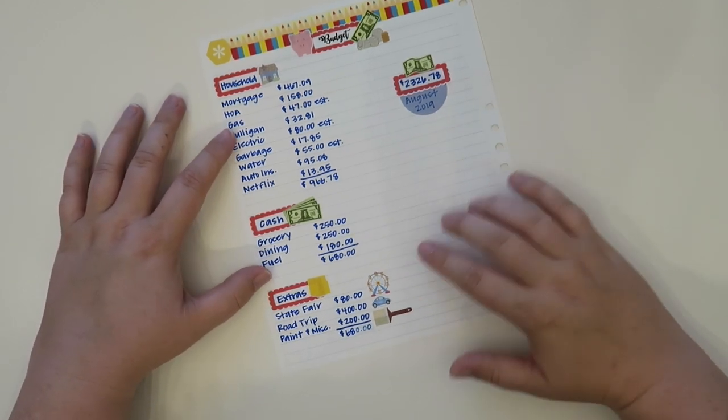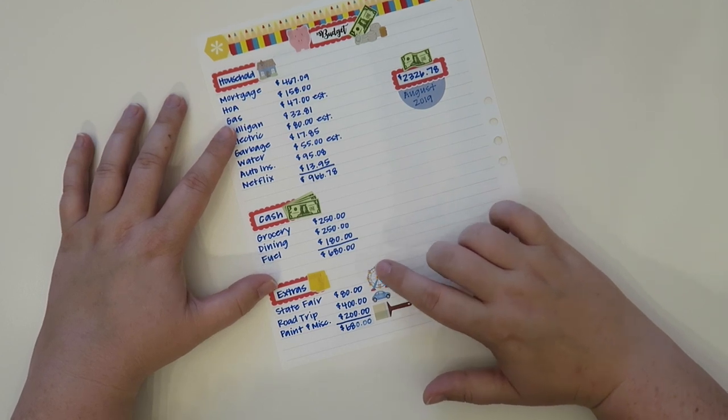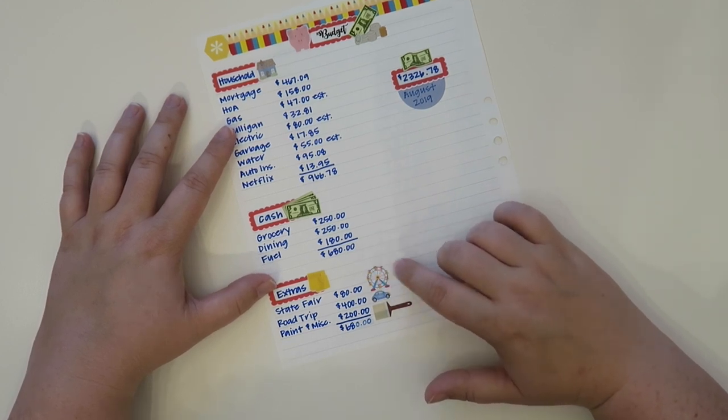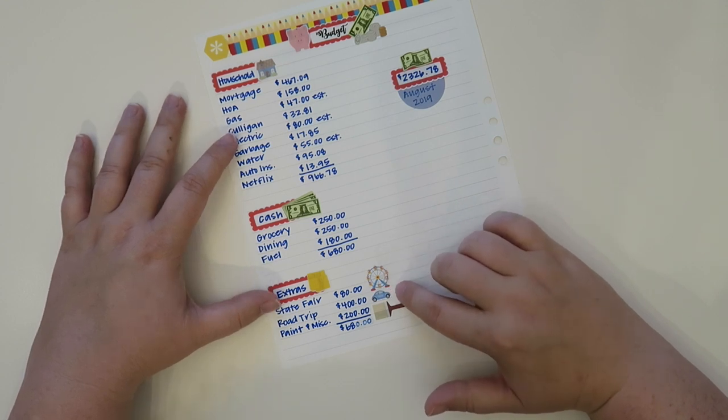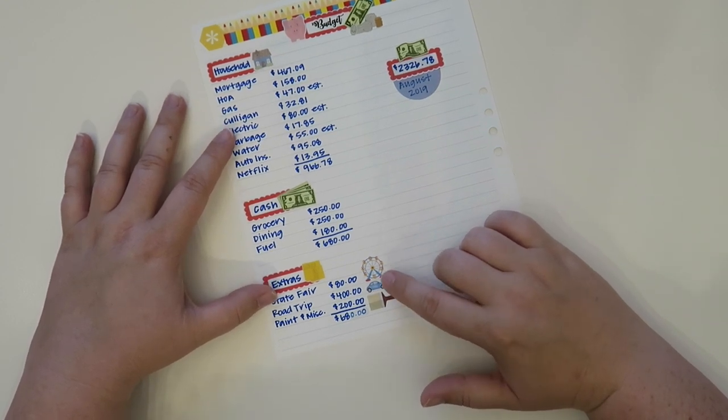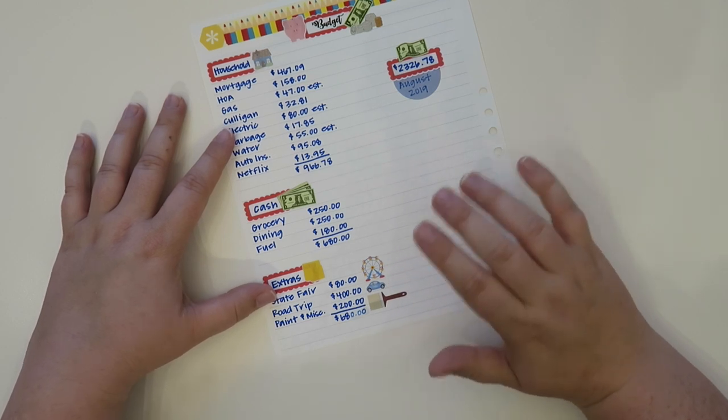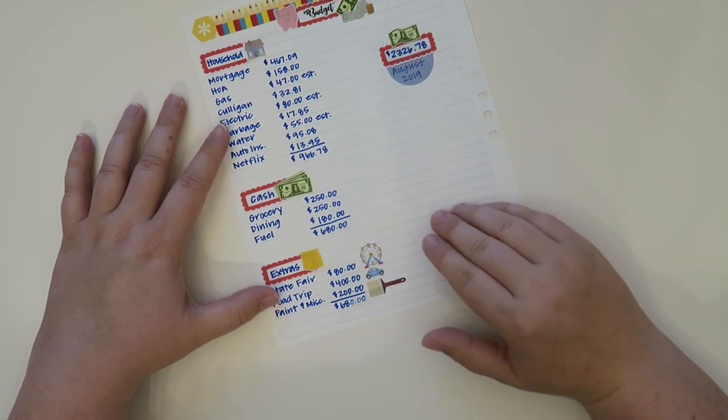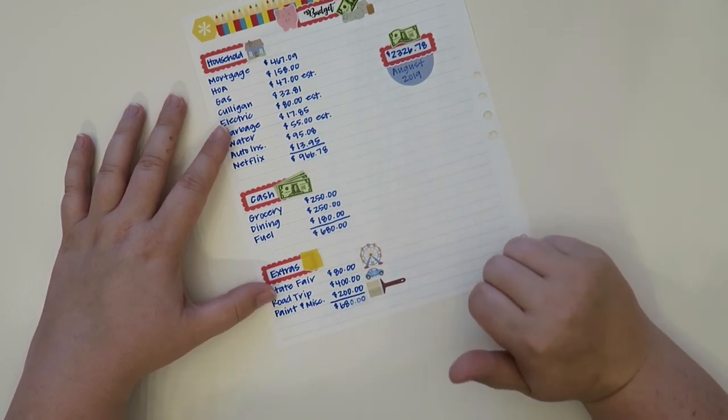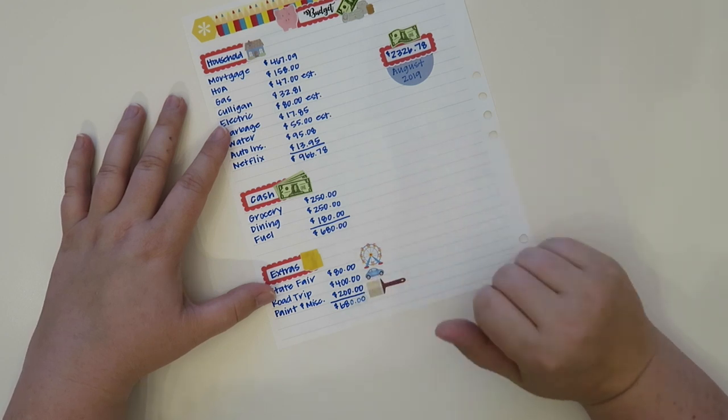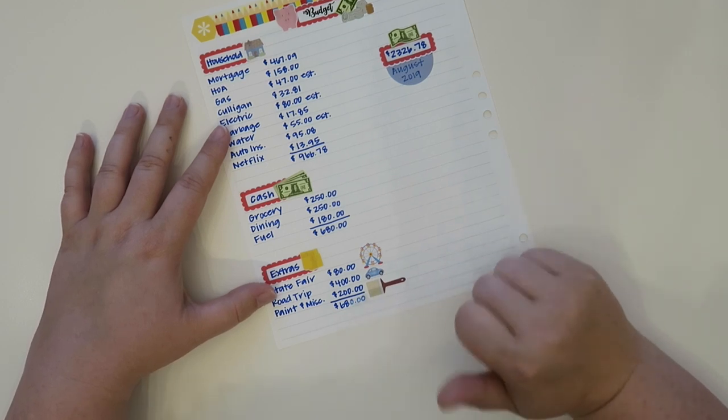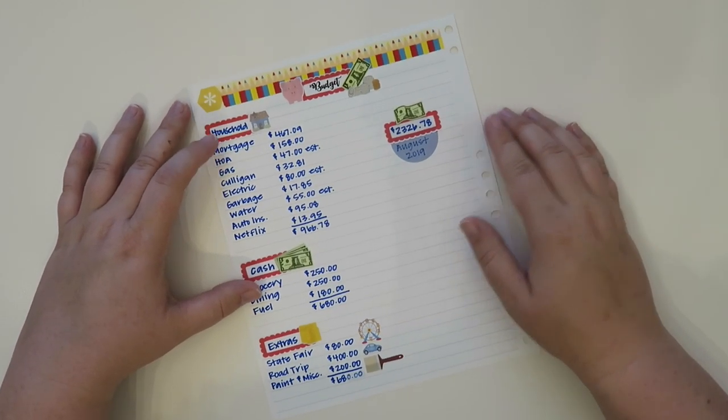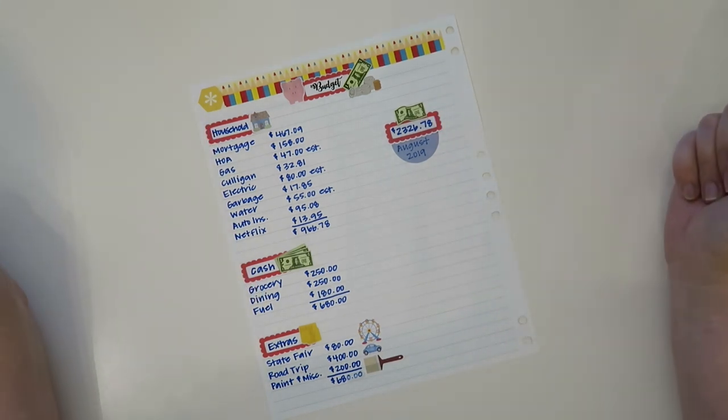And then my extras this month - my state fair is coming up in the month of August and that I allocate $80 for. Road trip is going to be about $400. I'm splitting all of the costs with my mom. We're going to Niagara Falls. And then paint and miscellaneous which will be like any supplies I need or whatever - I'm going to be painting my kitchen cabinets coming up very soon and that's going to be about $200, I'm thinking like maybe about $180 but I wanted to put a little bit of buffer in there. So that brings me also to $680. So my total budget for the month is $2,326.78.